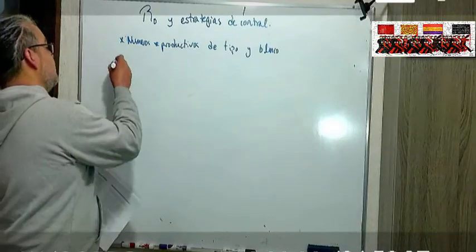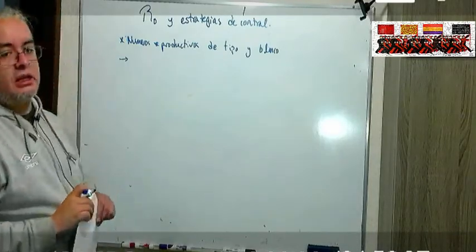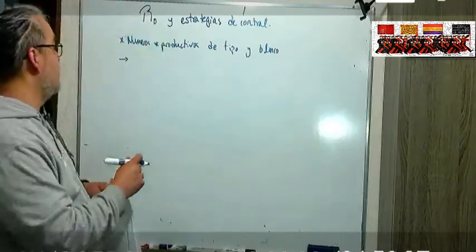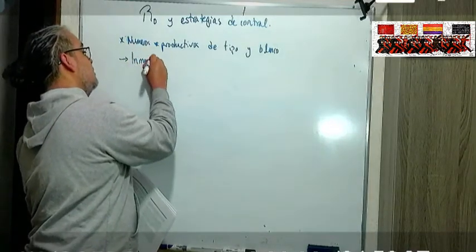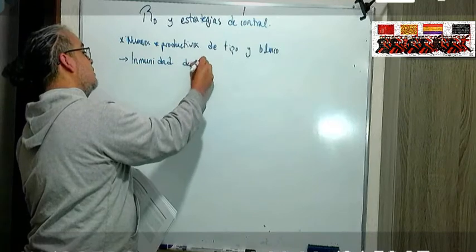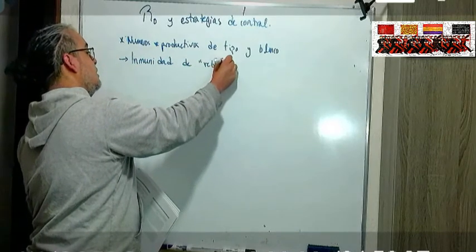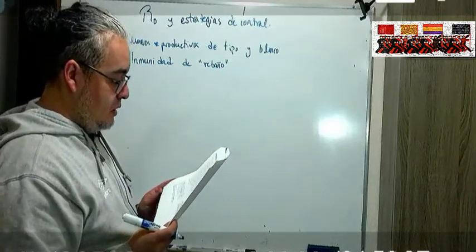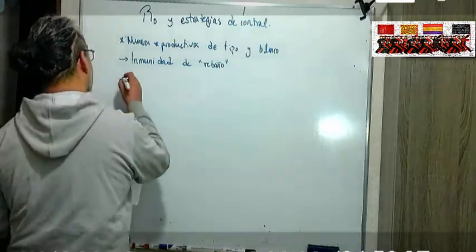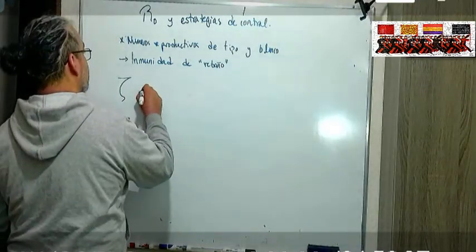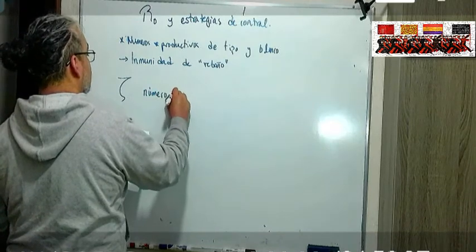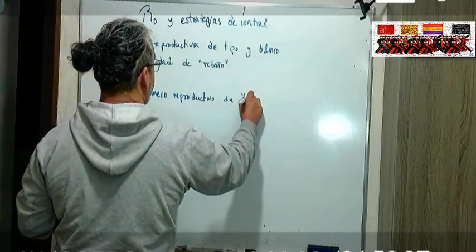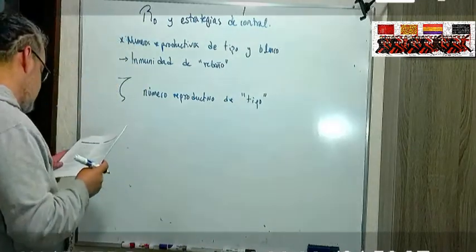Qué es lo que busca cualquier estrategia de control, pues lograr la inmunidad de rebaño que le llaman. Entonces vamos a llamarle tau mayúscula al número reproductivo type reproduction number.